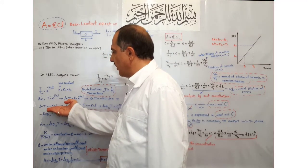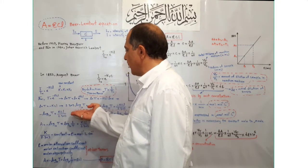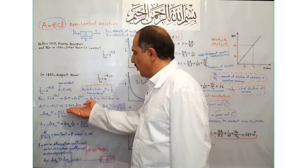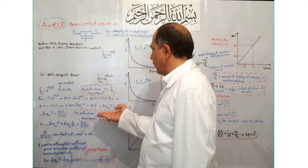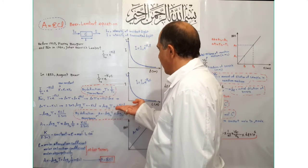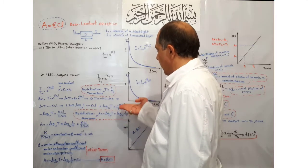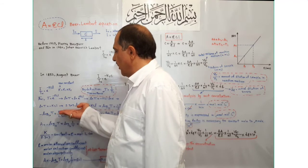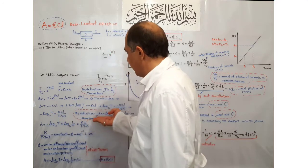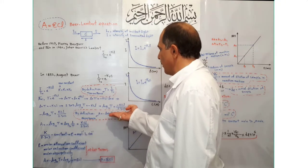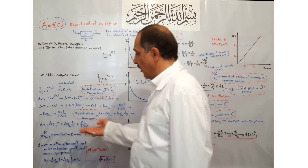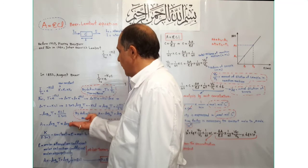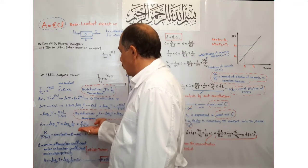Converting natural logarithm to base-10 logarithm gives 2.303 × log₁₀(T) = −KCL. Transferring 2.303 to the right side gives log₁₀(T) = −KCL / 2.303. Transferring the negative sign to the left side gives −log₁₀(T) = KCL / 2.303. By definition, absorbance is defined as the negative base-10 logarithm of transmittance. So, absorbance = −log₁₀(T) = KCL / 2.303.